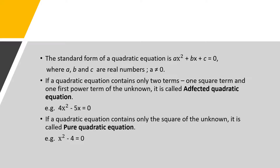The next type of quadratic equation is the pure quadratic equation. If a quadratic equation contains only the square of the unknown, it is called a pure quadratic equation. For example, x squared minus 4 equal to 0. In this equation we observe that the x term is not there.